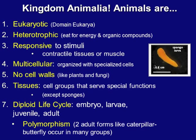Now we're in the kingdom Animalia. Let's discuss what animals are. 1. They're all eukaryotic — they belong to domain Eukarya, which means they have membrane-bound organelles and a nucleus. They're heterotrophic; they eat for energy and also need organic compounds. 2. They're responsive to stimuli, so they have contractile tissues or muscle. 3. They're multicellular, organized with specialized cells. 4. They do not have cell walls like plants and fungi, made out of cellulose and chitin respectively.